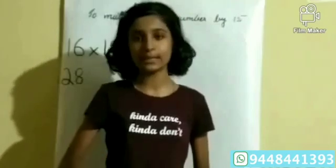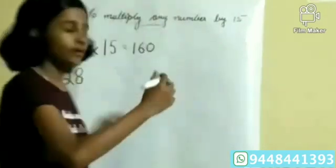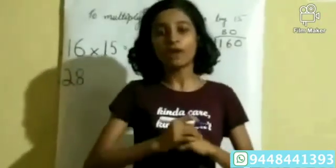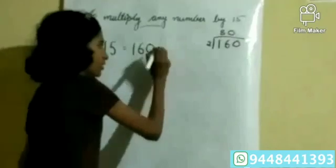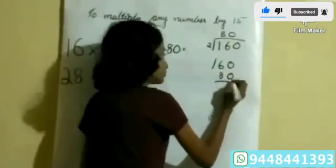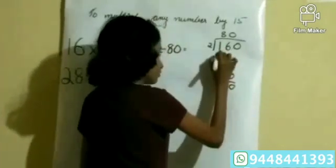Now we want to divide 160 by 2. 160 divided by 2, it will become 80. Then we need to add 160 and 80. 160 plus 80 gives us the final answer as 240.